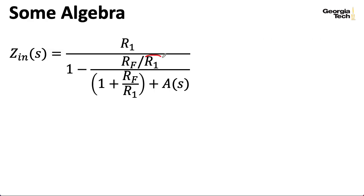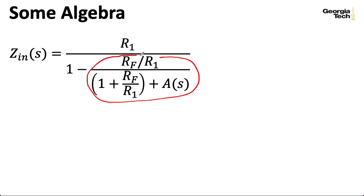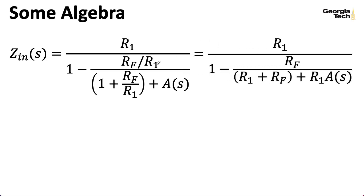I would like to clear out the R1 terms. So let's take the numerator and the denominator of this sub-fraction and multiply each by R1. I wind up with an RF in the numerator, the R1 goes away, the A term winds up with an R1 next to it, and where I had RF over R1, I now have just RF. I think that's a little simpler.